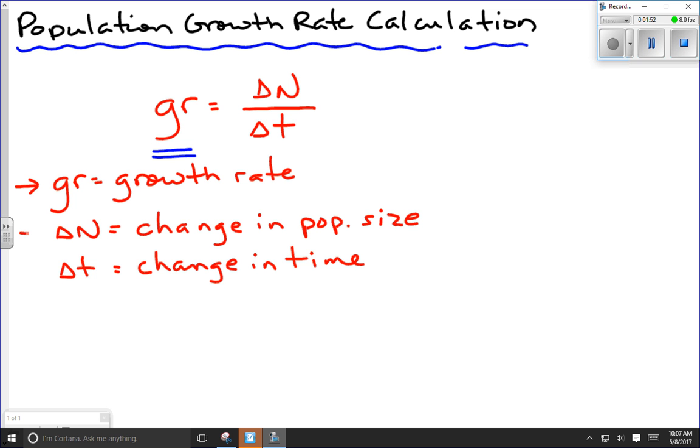Delta N, our change in population size, could be given in the question or it could be calculated. You could be given factors such as natality, mortality, immigration, and emigration and have to add and subtract them. Natality is birth, so you would add the number that were born. Mortality is death, so you would subtract those. Immigration is to move in, so you'd add those. Emigration is those individuals that move out of the population, so you would subtract them. So you might be given the population size changes or you might have to calculate it.